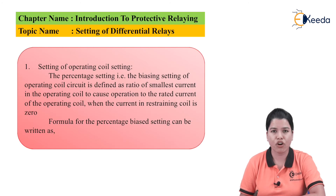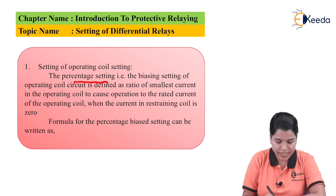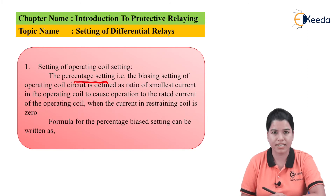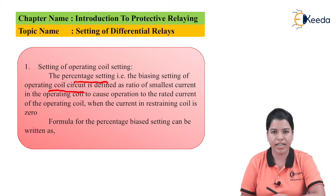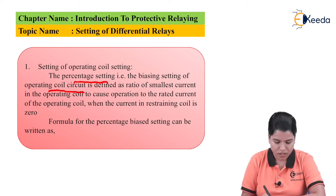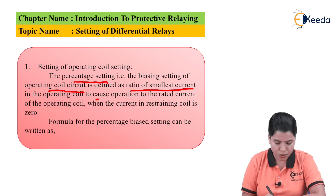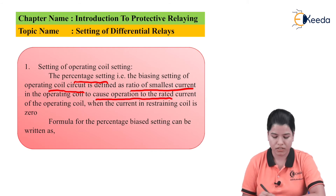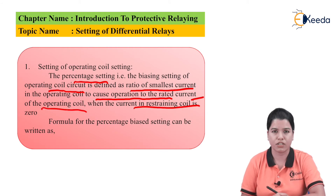First, let us study the setting of the operating coil. The percentage setting — that is, the biasing setting of the operating coil circuit — is defined as the ratio of the smallest current in the operating coil to cause operation, to the rated current of the operating coil, when the restraining coil current is zero.